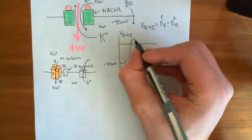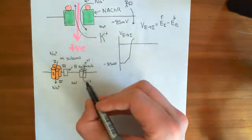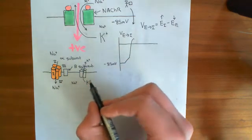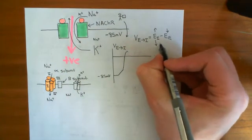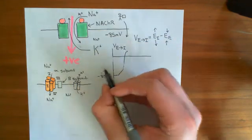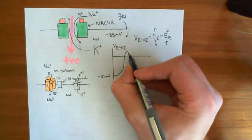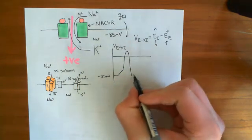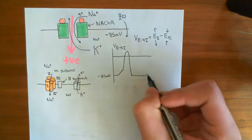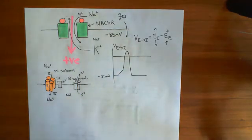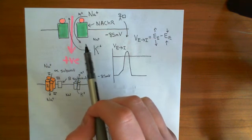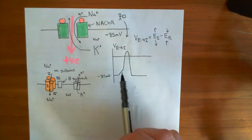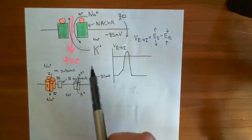Moving positive charge out of the cell raises the electrical potential of the extracellular compartment and reduces that of the intracellular compartment, causing the electrical potential difference across the membrane to repolarise and take it back down. That is the action potential complete — occurring across the membrane because of the activation of these nicotinic acetylcholine receptors. In the next video, we'll discuss how this action potential is propagated to neighbouring portions of the membrane.